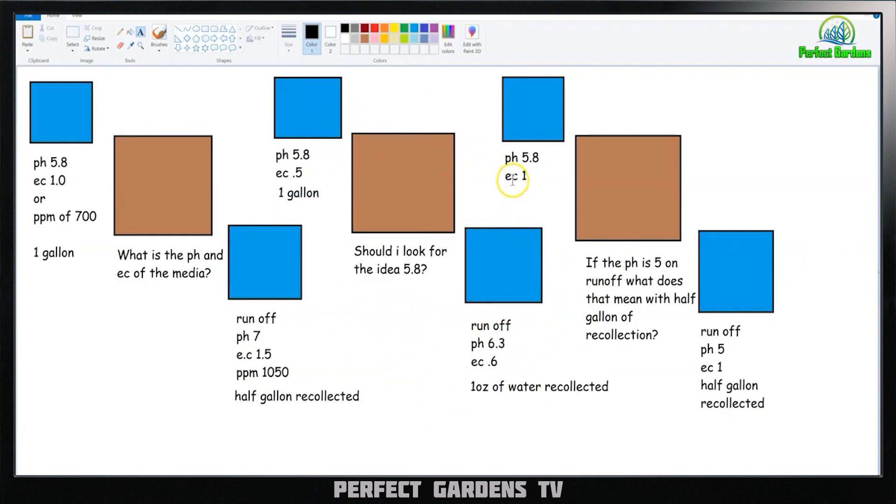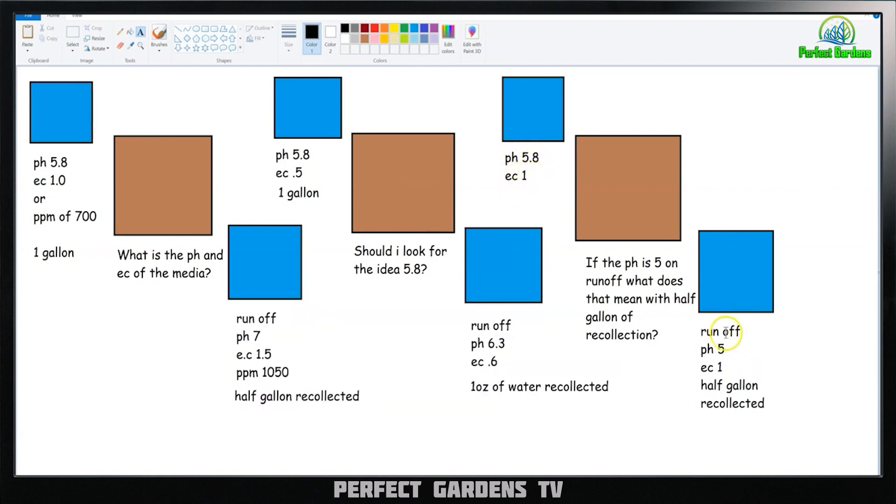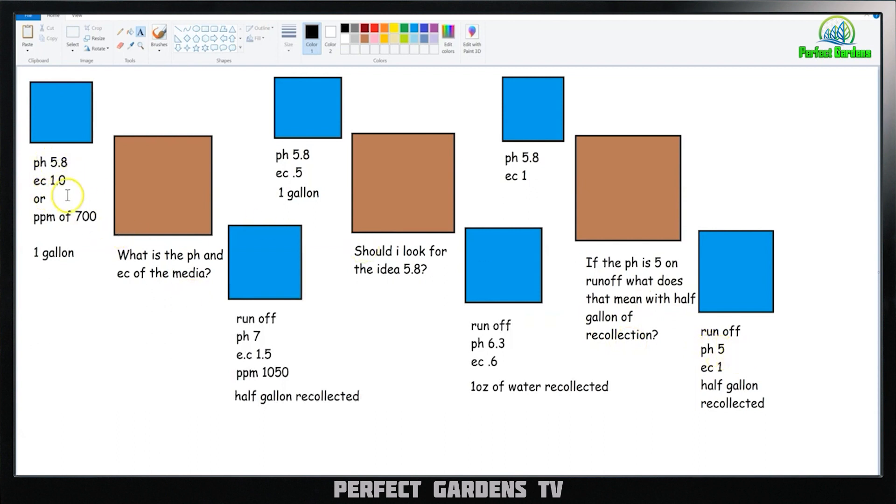And then let's say we come over here. So your pH is 5.8, your EC is 1, your runoff is 5, and your EC is 1, and you recollected a half gallon. If the pH is 5 on runoff, what does that mean with half gallon of recollection? Well, right here, just as what we did over here, having to add more pH down to fix our pH issues and to reduce our parts per million, right over here, we're having our EC be a nice reflection of each other, but our pH is off.